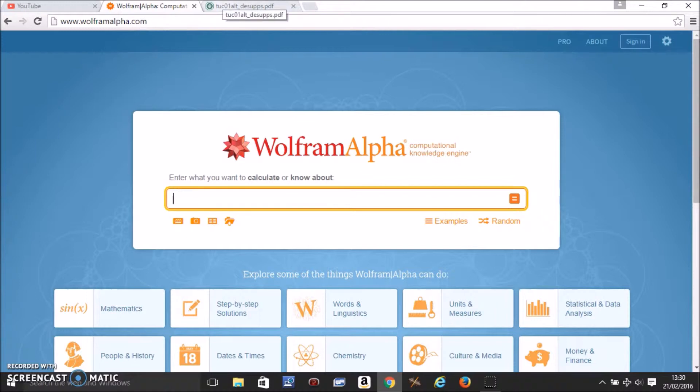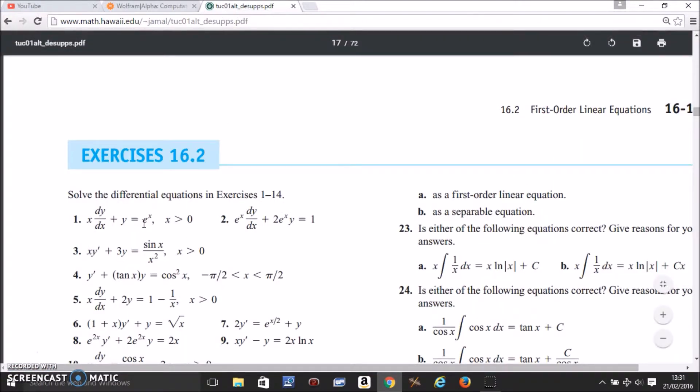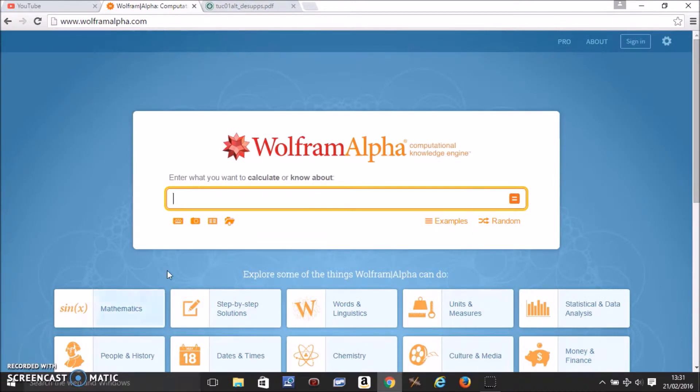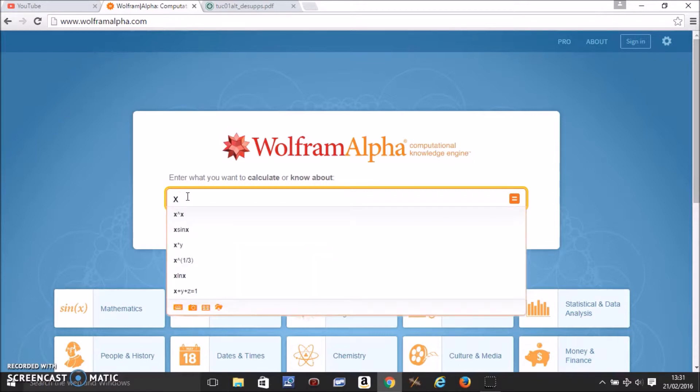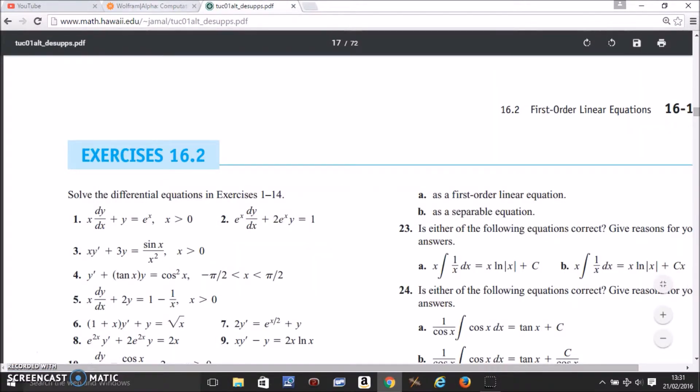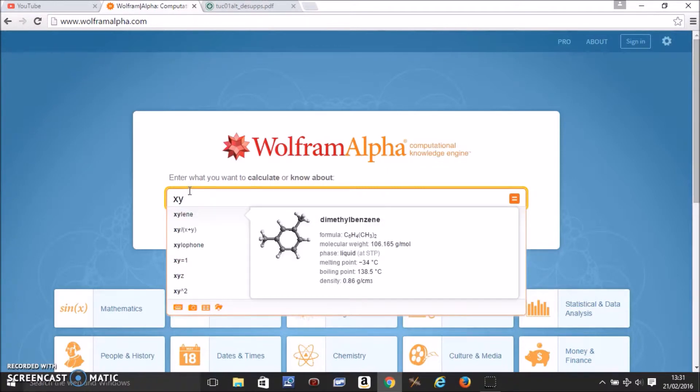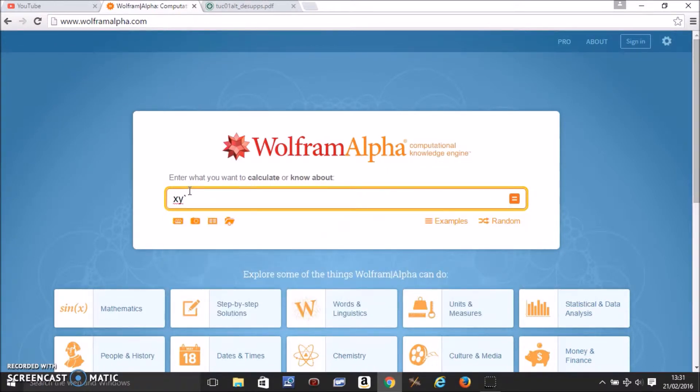We'll take this example, the first one, and I'll show you how to plug this in Wolfram Alpha. You should plug it the way it is. In place of dy by dx, you put y' with this symbol which recognizes it as dy by dx, plus y equals e to the power of x.